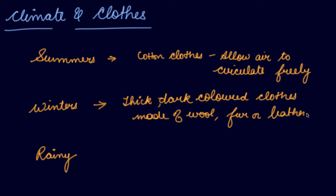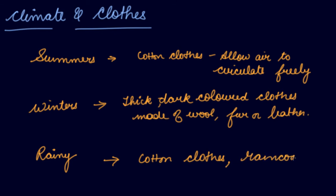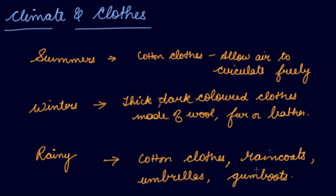During the rainy season, we usually wear cotton clothes. We also use raincoats, umbrellas, and gum boots. This is how we choose our clothes according to the climate and select the fabric we want to wear.